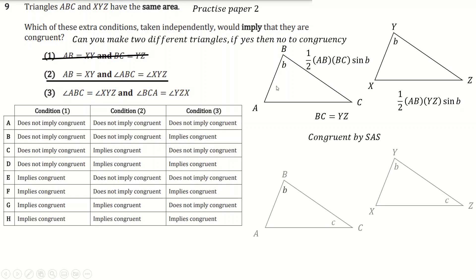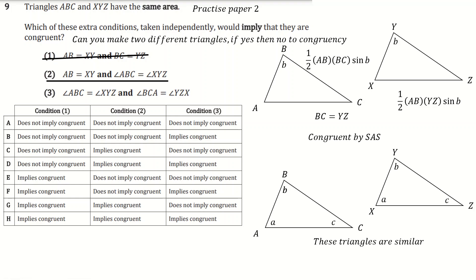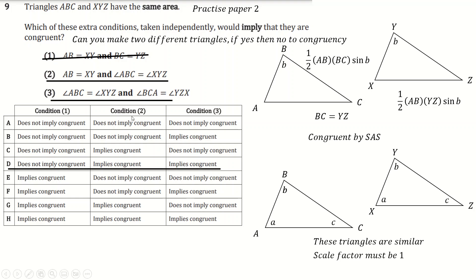For option D: if angle ABC equals angle XYZ and angle BCA equals angle YZX, then a nice trick is that if you know two angles of a triangle you also know the third because they must sum to 180. So the third angle must be equal as well. These two triangles are therefore similar. If they also have the same area, the scale factor must be 1, which means all lengths are equal, which means they are congruent. So option D also implies congruency, and the answer is D.